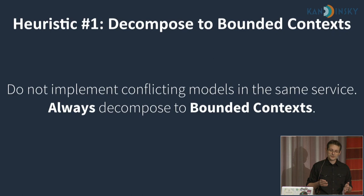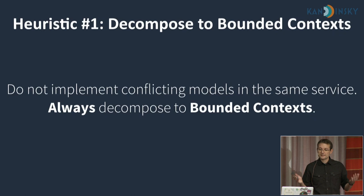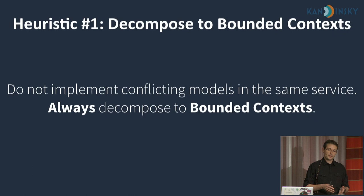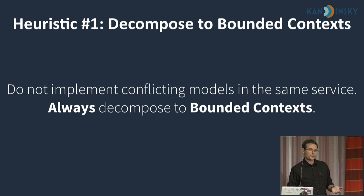First heuristic: always decompose to bounded contexts. If you notice terms that mean different things to different people, define strict bounded contexts and decompose the system accordingly. Do not implement conflicting models in the same service — otherwise, believe me, there will be balls of mud in your future. At one point we built such a huge monolith with conflicting models that we just felt something was wrong and had to change it.